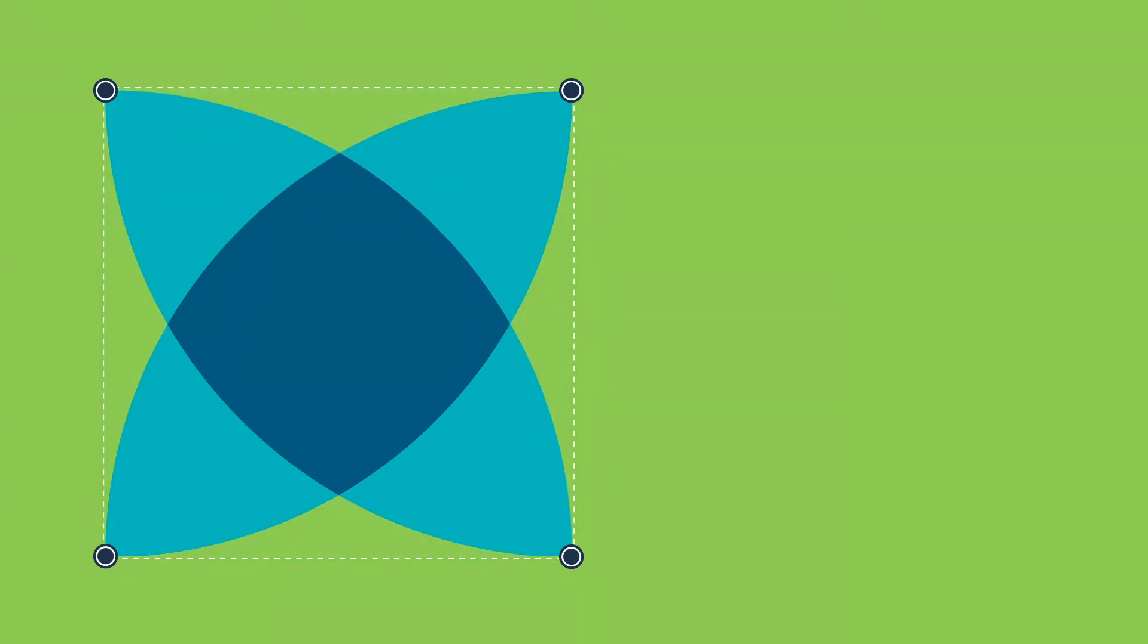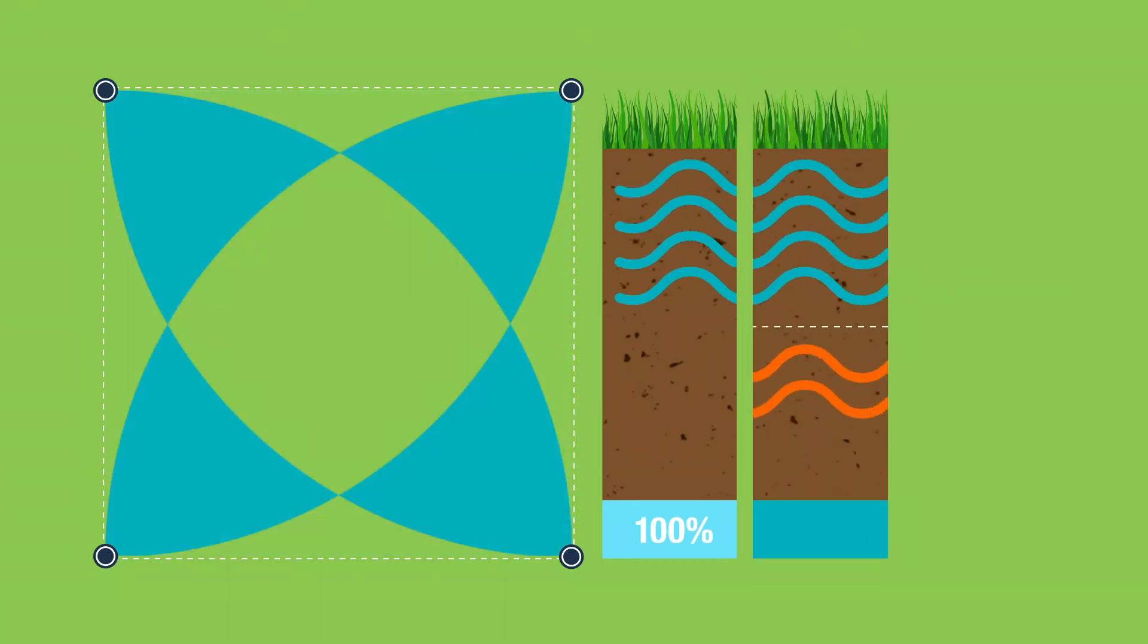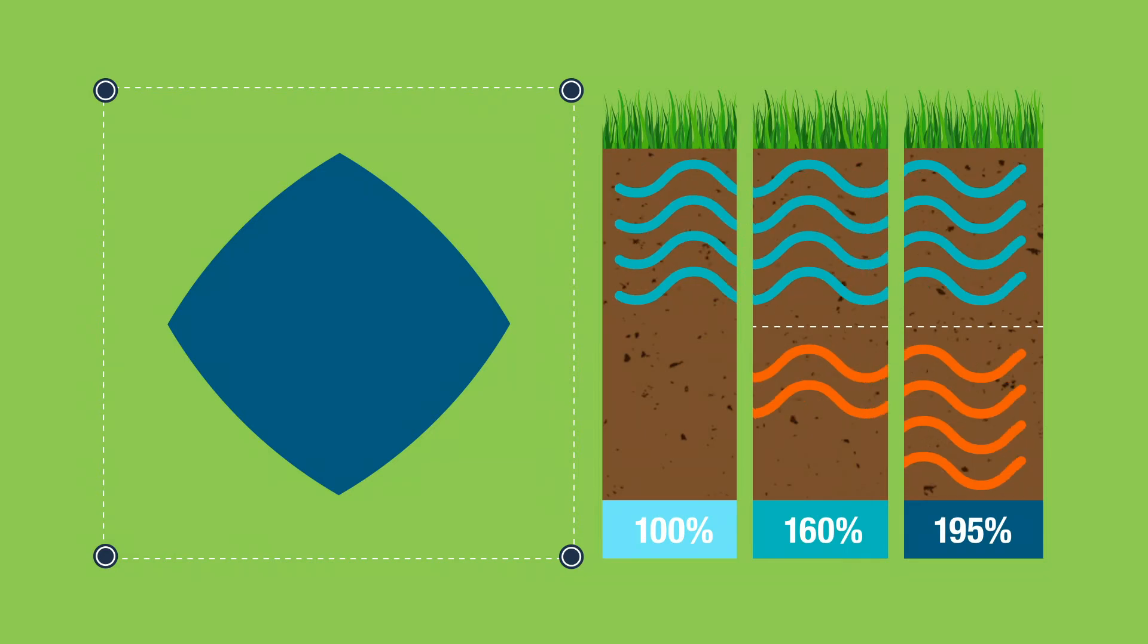For current sprinkler systems to provide these areas with the correct amount of water, they must give these areas 160% of the water they need, and this area here will receive 195% of the water needed for a healthy lawn.